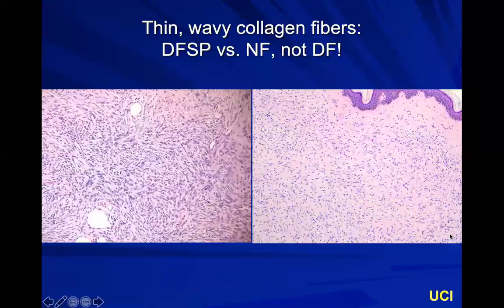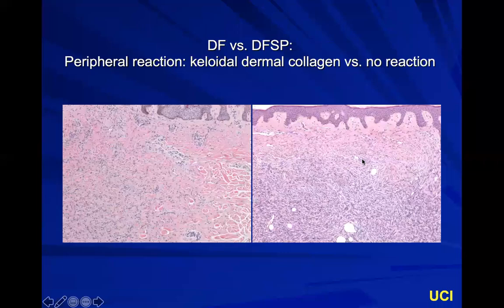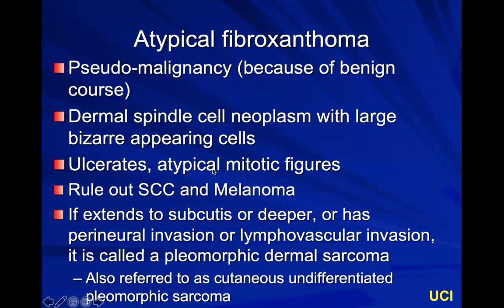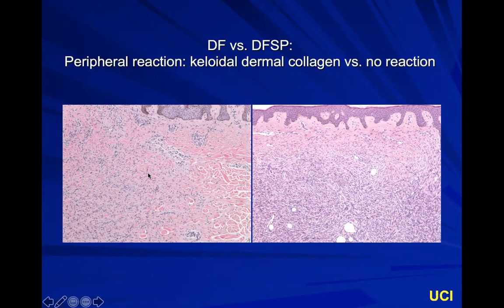These wavy cells can be hard to distinguish from something neural. The key difference from a dermatofibroma (DF): in DF you get keloidal collagen trapping, whereas DFSP just runs off the edge without that reaction. The tissue reaction in DF is protective — it holds the tumor in place. In DFSP, which is more like cancer, it's invisible. The cells in DF are more stellate; DFSP has this cellular uniform wavy growth without the grabbing keloidal collagen.